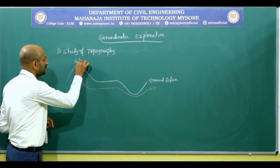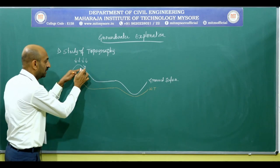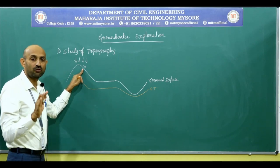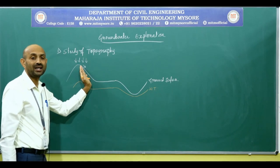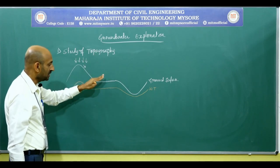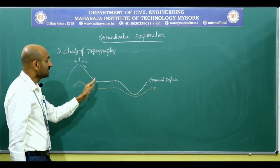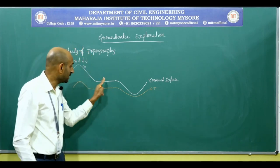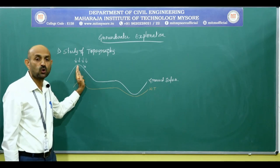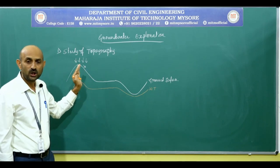Surface runoff is very high at hill stations and steep slope regions. When we come to level ground, when precipitation takes place, the water first enters the ground through the surface. After which, only some amount of water takes place as surface runoff. This means runoff is very high at hill stations and steep slopes, and very little water undergoes percolation there.